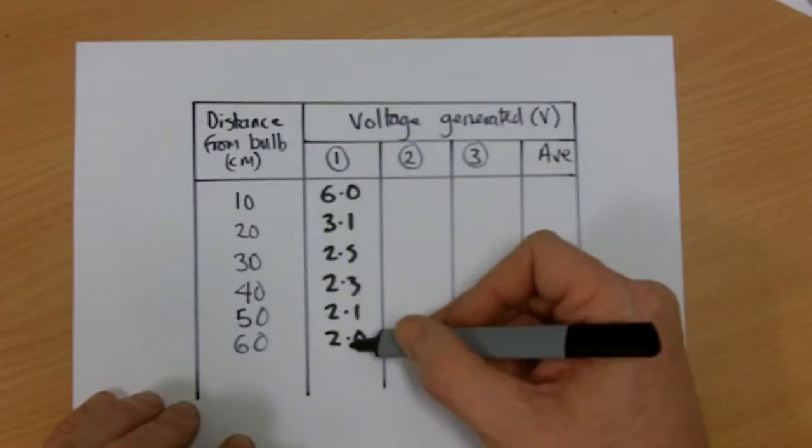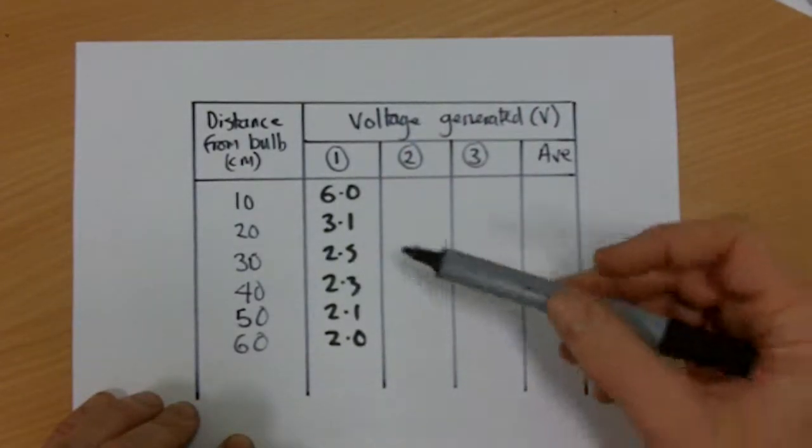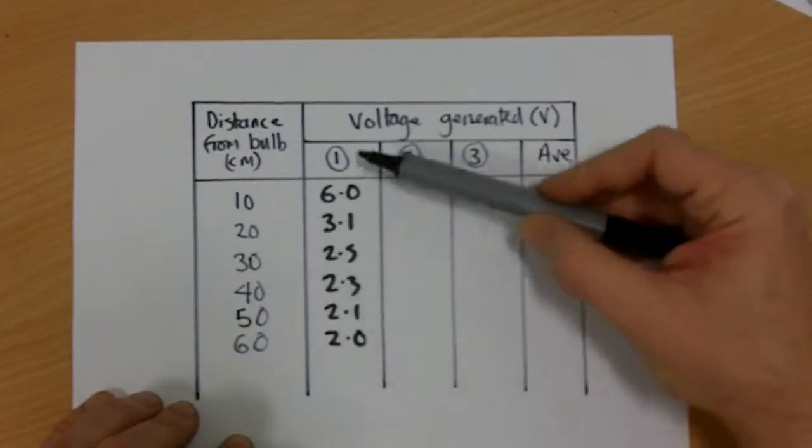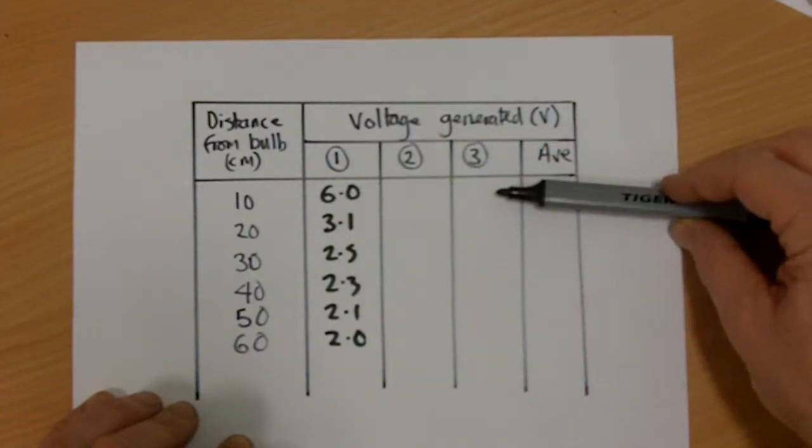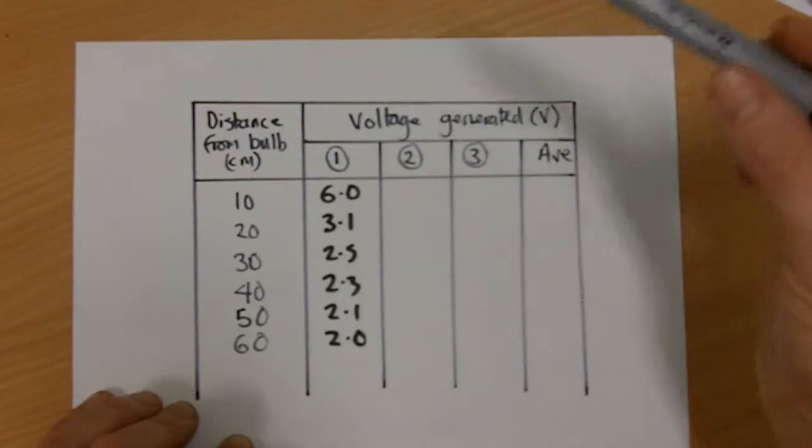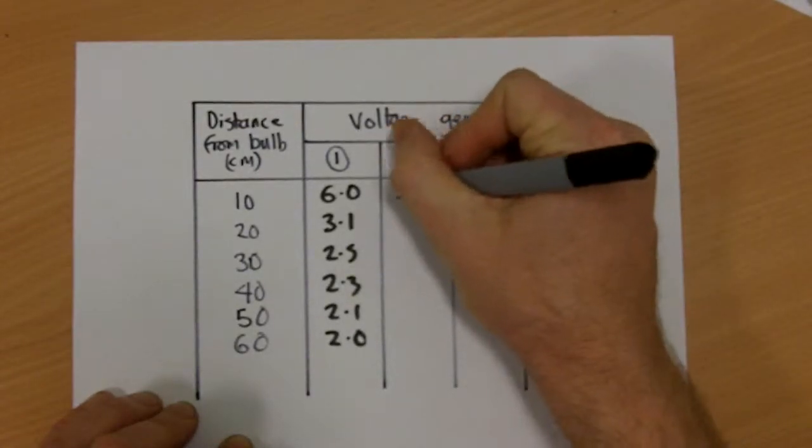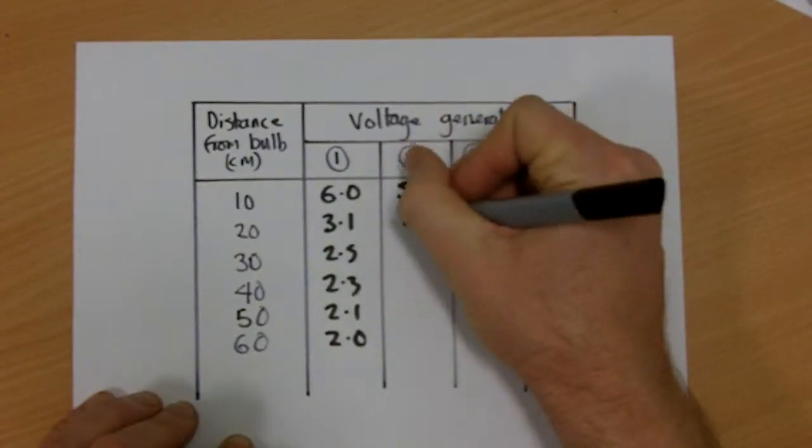Now if I get one set of results and then I run out of time, I've still got enough data here to plot myself a graph, whereas if I do my three results across the top, then I won't have a range. So I can go back and do my second set of readings, and these are my second set of readings.